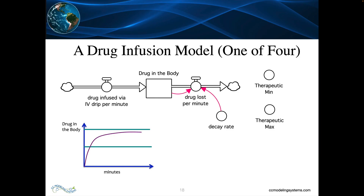Consider an emergency room problem. Students are told they are medical doctors working in an emergency room and a patient comes in who needs immediate medical attention. The student, as the doctor, decides to connect the patient to an IV drip that will supply a constant amount of therapeutic drug per minute. The doctor estimates the person will metabolize the drug at a specific rate per minute, and wants to determine the pattern of the drug level in the body over 24 hours — whether the patient will stay within the therapeutic range.